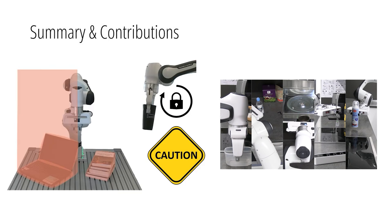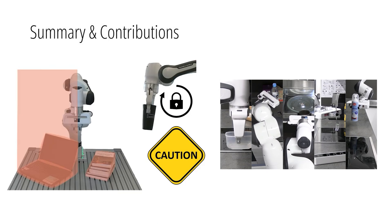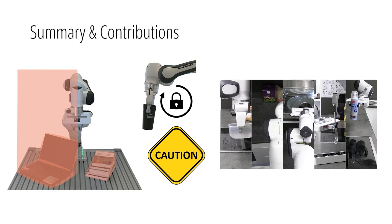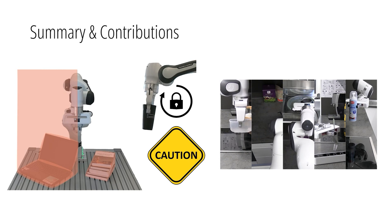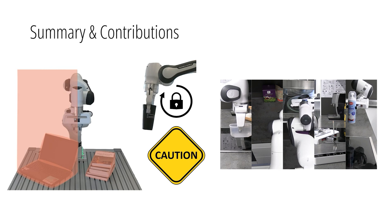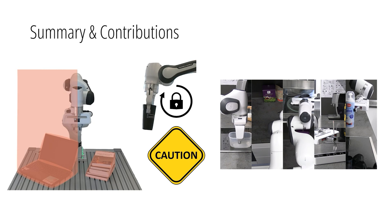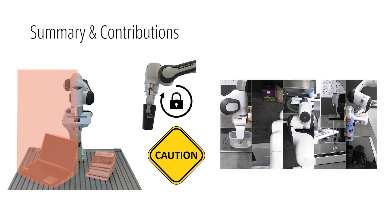To summarize, in this work we presented an approach to go beyond obstacle avoidance in robotics by leveraging semantic knowledge about the environment. Using our proposed method, we are able to synthesize semantic safety constraints. As shown in the examples, this method is generalizable to different environments and different constraint types, such as keeping a cup upright and ensuring plastic items avoid the stove.